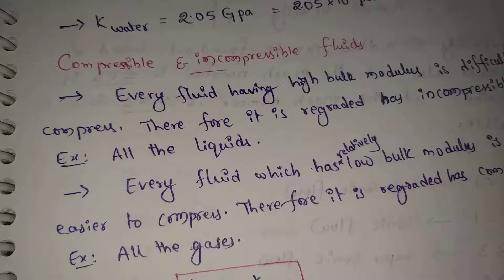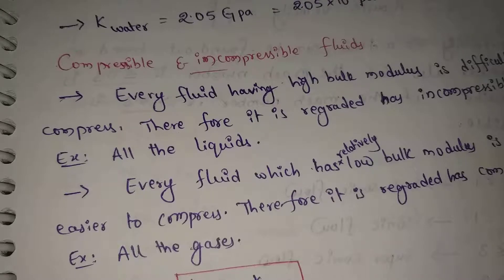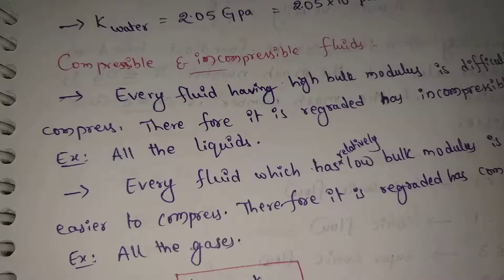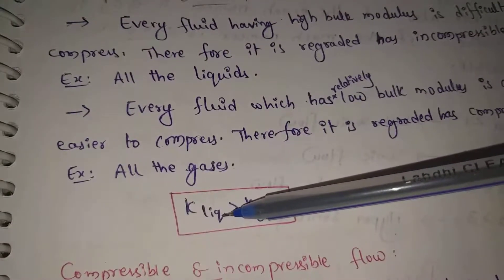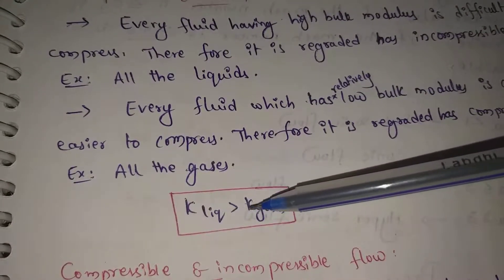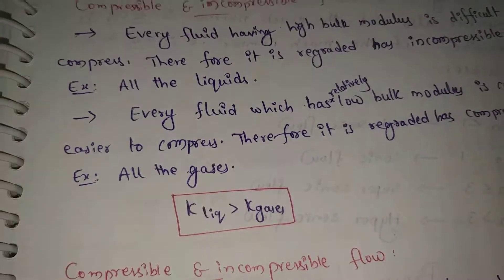When we consider gases, we get very low bulk modulus. Because gases have very low bulk modulus, they are compressible fluids. The bulk modulus of liquids is greater than the bulk modulus of gases.